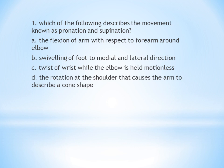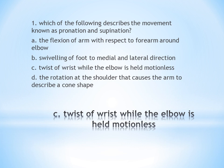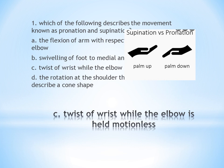What is supination and pronation? The answer is C — twist of wrist while the elbow is held motionless. Supination is palm up position. Pronation is palm down position. The other options: flexion of arm with respect to elbow is flexion and extension. Swiveling of foot to medial and lateral direction is adduction and abduction. Rotation at the shoulder is circumduction. So palm up and palm down is supination and pronation.